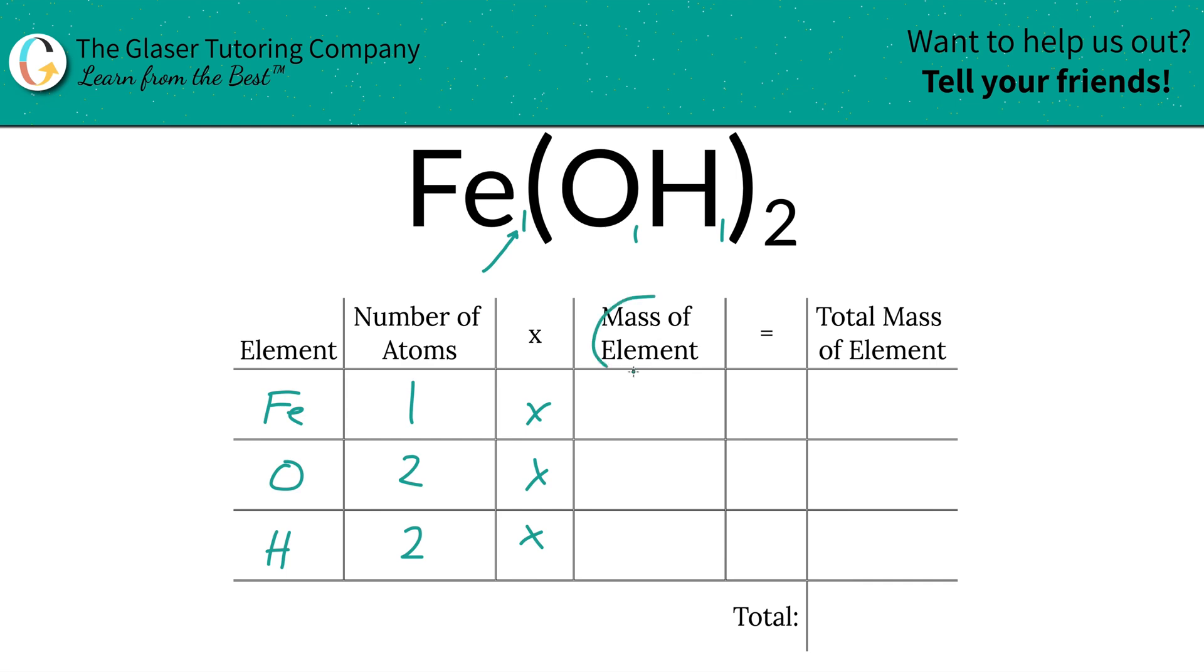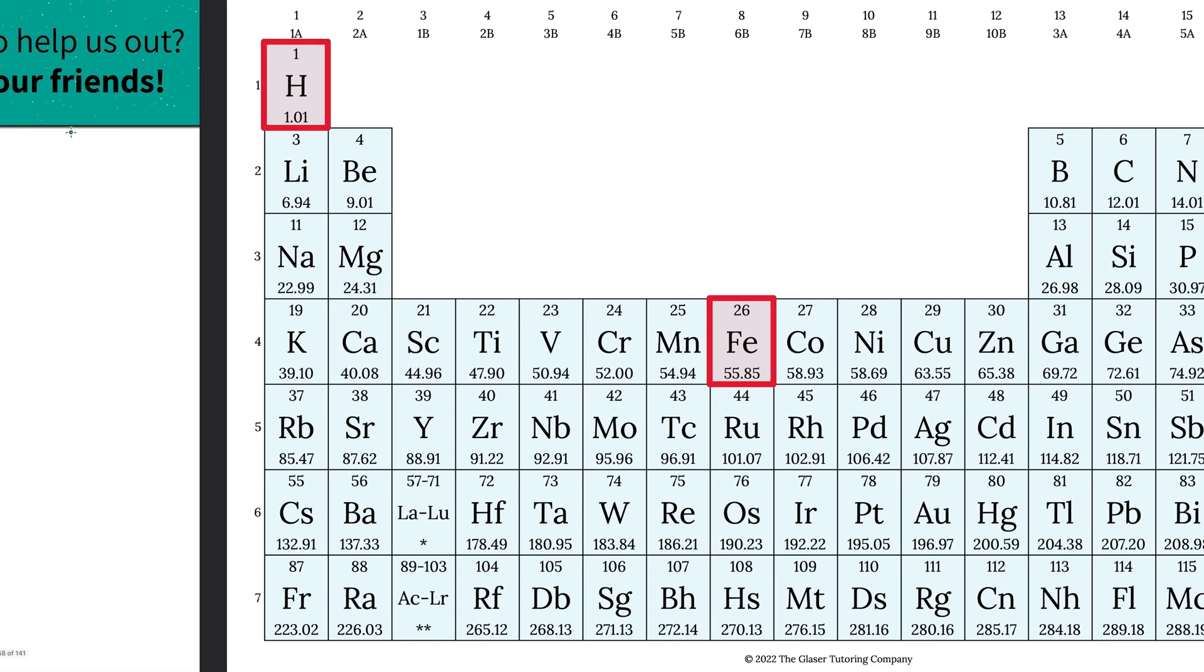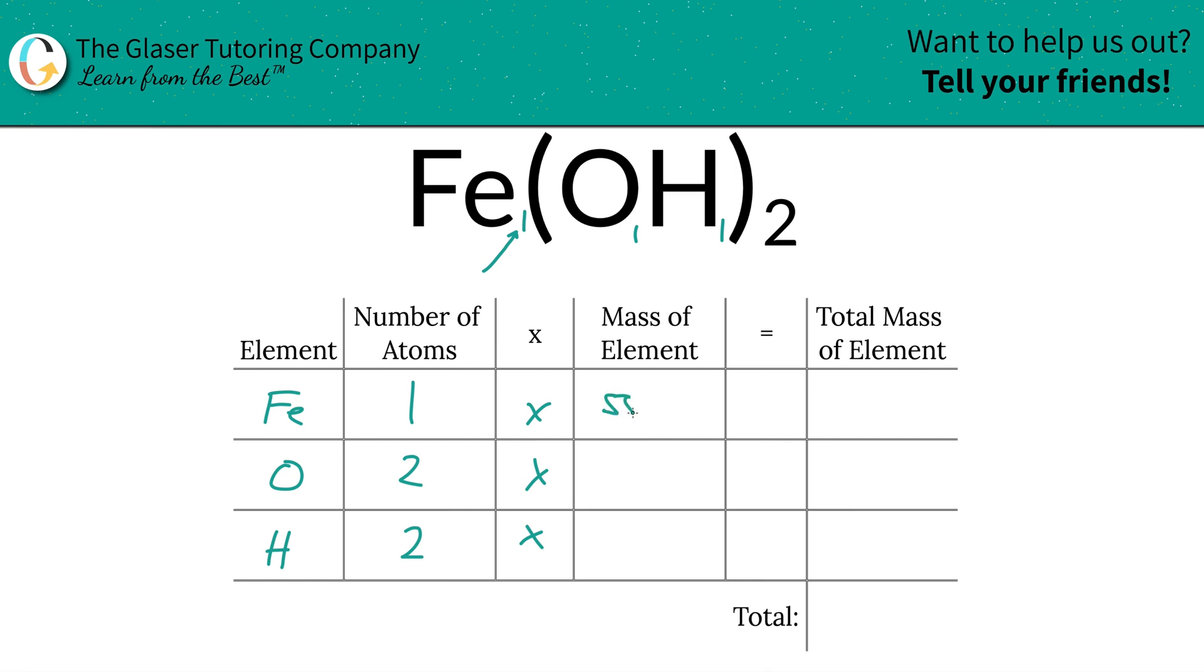You're going to take those number of atoms and then multiply it by the mass of each particular element. Those masses are found on the periodic table. Iron's mass is 55.85, oxygen is 16, hydrogen is 1.01. So we're going to write them in: 55.85, oxygen is going to be 16, and then hydrogen is 1.01.